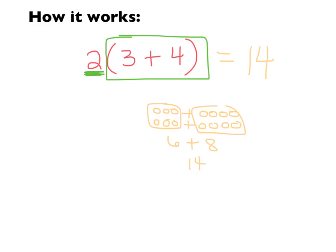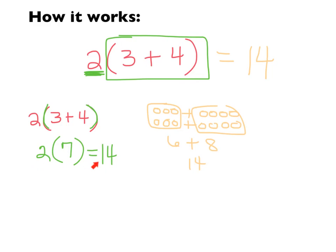Another way to think about that is to solve it using the order of operations. Go inside the parentheses and do 3 plus 4, which is 7. Now it says times 2, which gives me 14. So I know my answer is 14 — shown with pictures and by following order of operations.